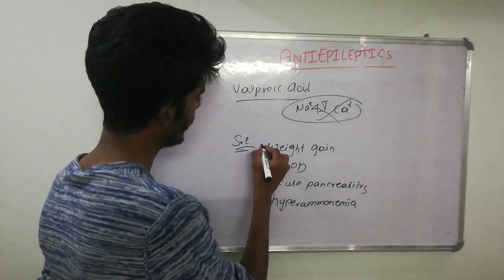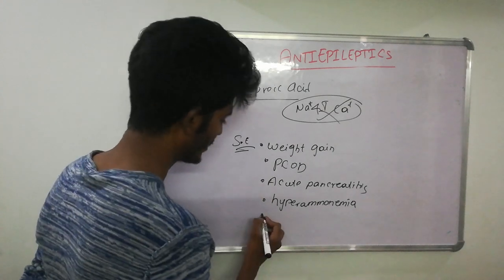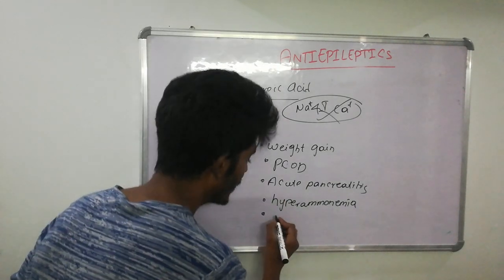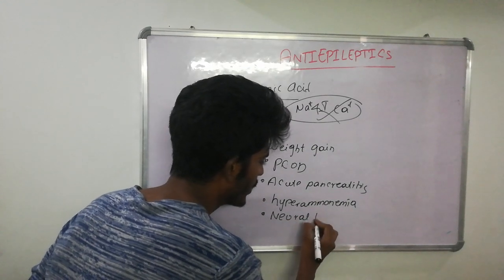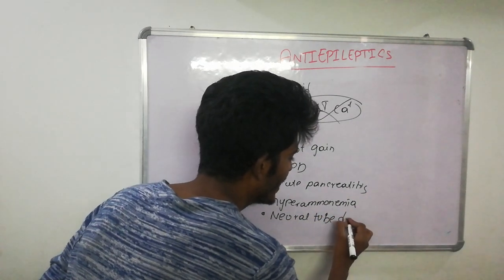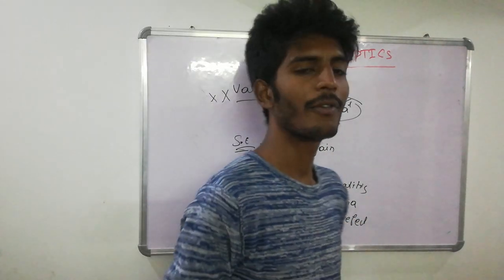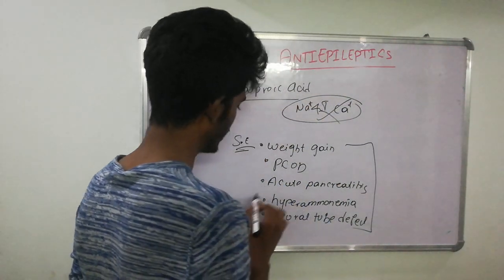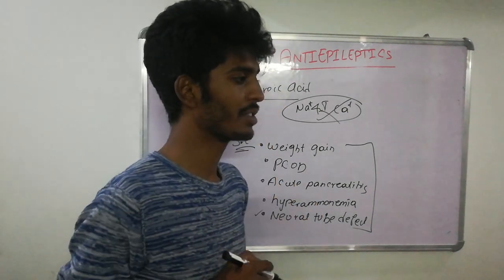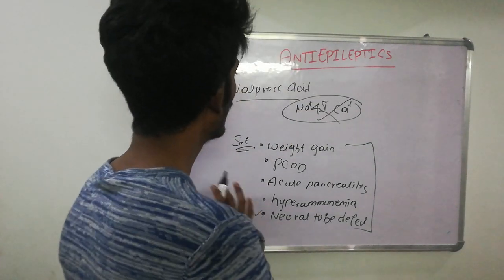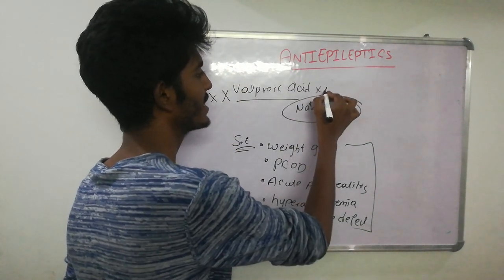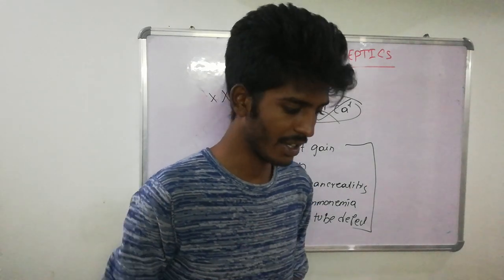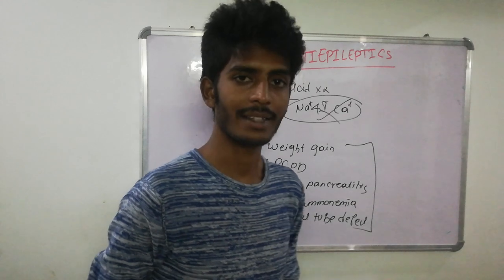Let's remember a few important side effects. Please do not give valproic acid to a pregnant woman, because it causes neural tube defects. The neural tube is an embryogenic structure responsible for the development of the brain and spinal cord. Using it in a pregnant woman can cause diseases associated with brain development. The reason I stressed valproic acid is that it can be used in almost all possible types of seizures.